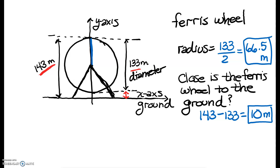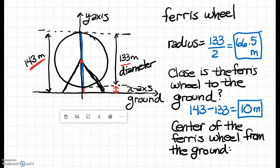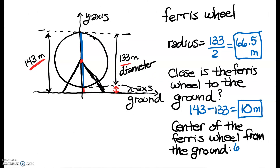My next question is: how high is the center of the ferris wheel? The center is made up of two parts — it is the radius of the ferris wheel plus the distance from the ground. My radius is 66.5 meters and the distance from the ground is 10 meters, so my center is a distance of 76.5 meters from the ground.